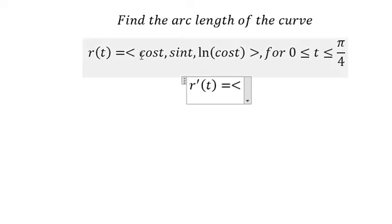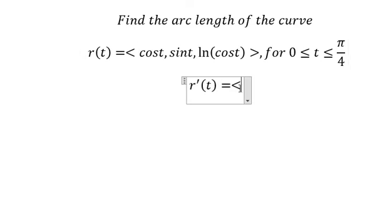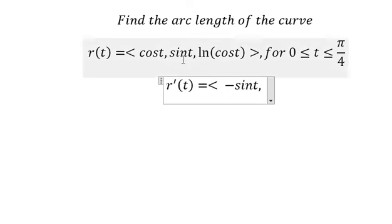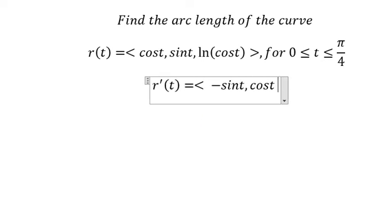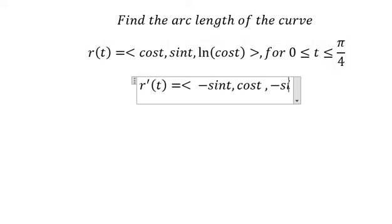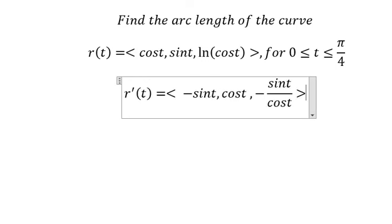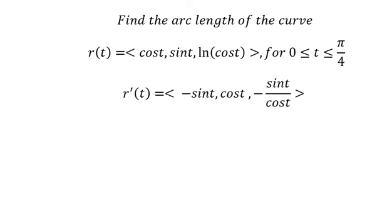The first derivative of cos(t) is negative sin(t). And the derivative of negative sin(t) over cos(t) comes next. We then use the formula of the arc length.